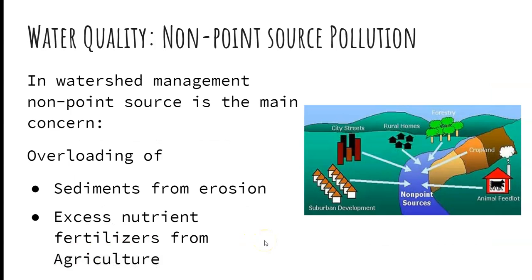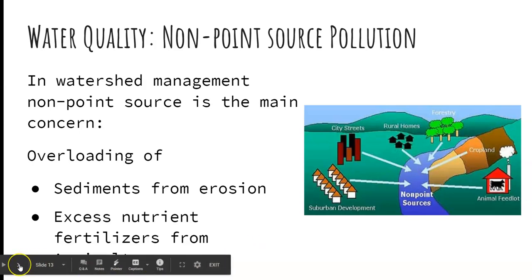The other type of pollution source is the non-point source, and this is a major concern because it comes from multiple sources that are difficult to identify. These include sediments from erosion — perhaps from roads or construction in a watershed — where you can't pinpoint exactly where the erosion is coming from. Also, excess nutrients from agricultural fertilizers are common, and when there are many farms you can't tell which one is producing which pollutants, but you know they're coming from those sources.